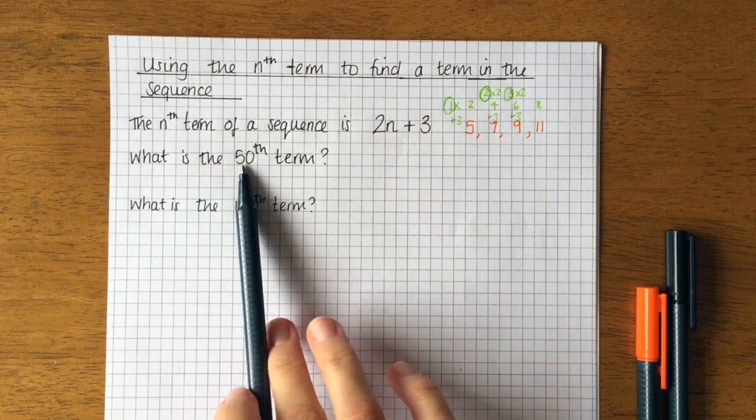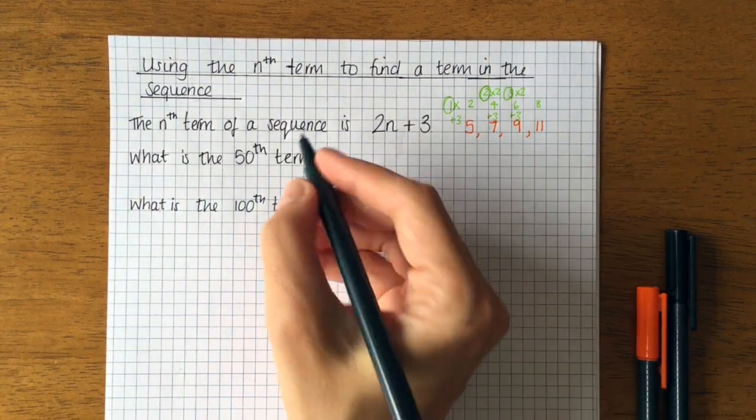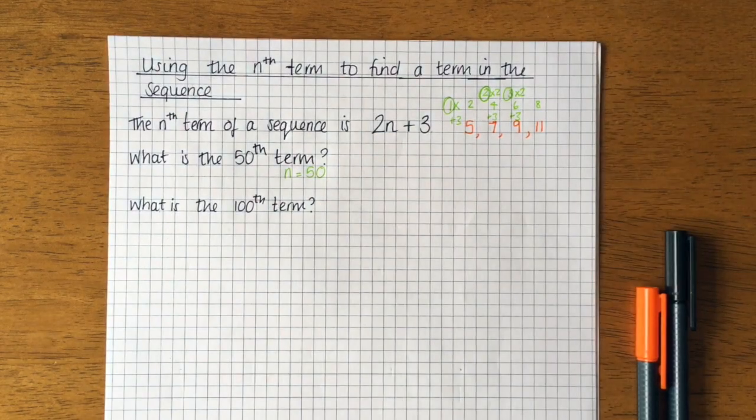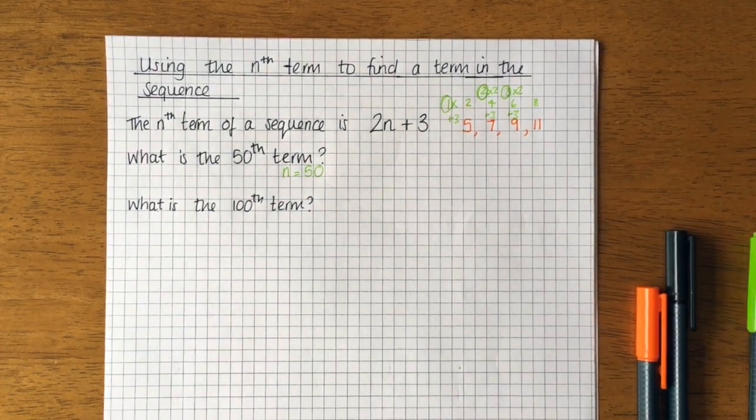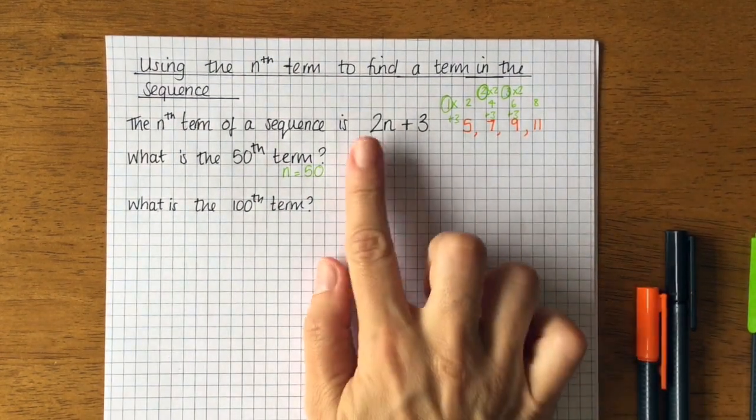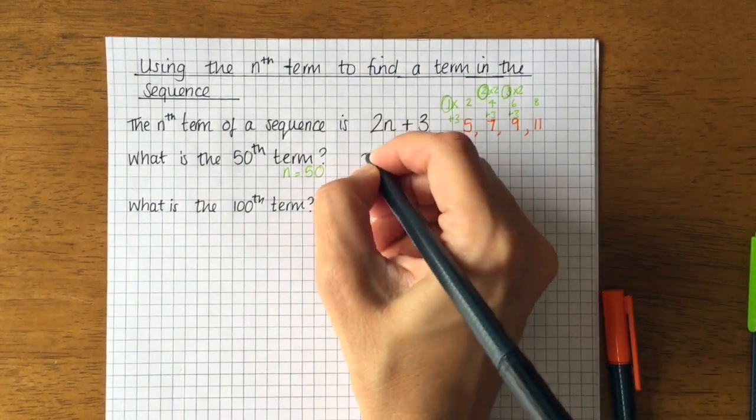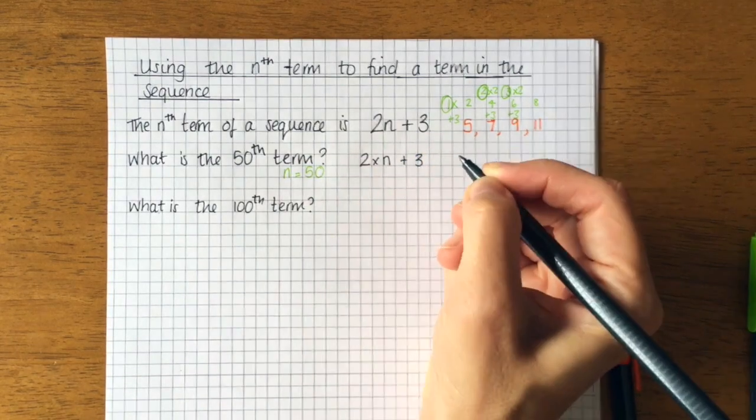So if I wanted to find the 50th term in my sequence, I'm saying that n is equal to 50. So if you remember from last time, when a number and a letter are together, it means that they're multiplied. So I write it out, 2 times n plus 3. So I'm going to substitute my n for the number that I want it to be, which is 50.